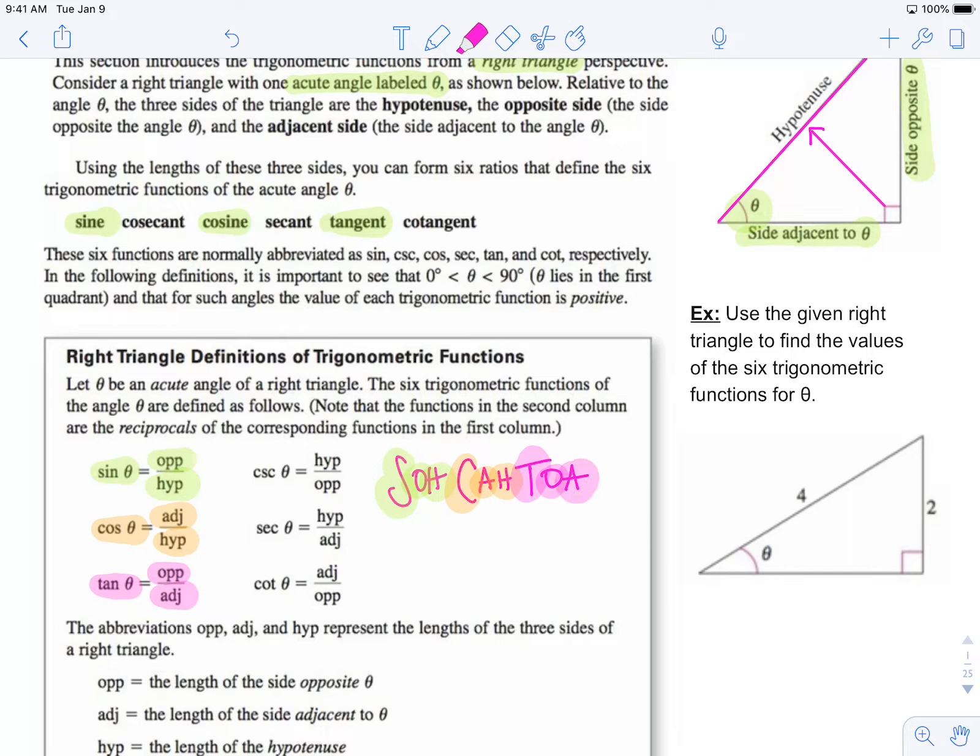Now once you know those three trig functions, you can figure out their reciprocal ones, which are cosecant, secant, and cotangent.